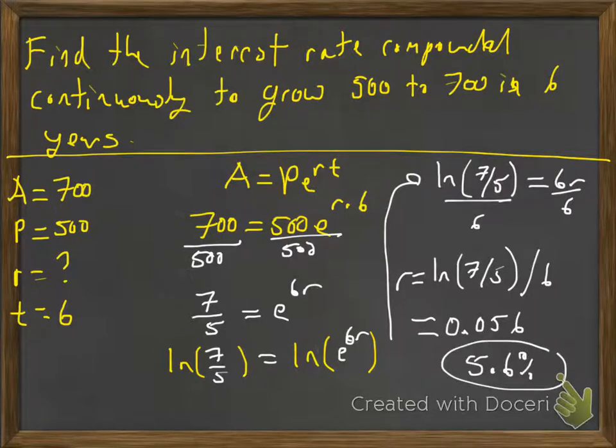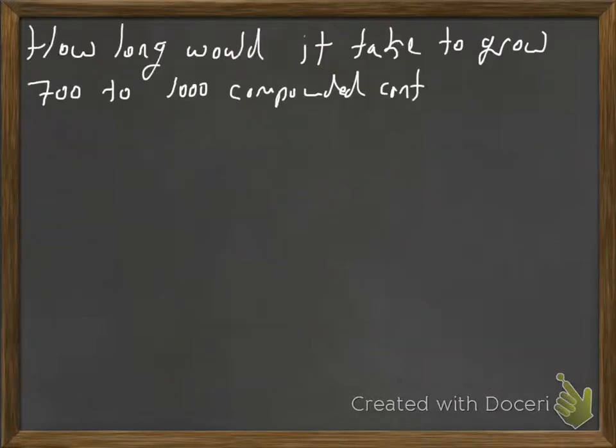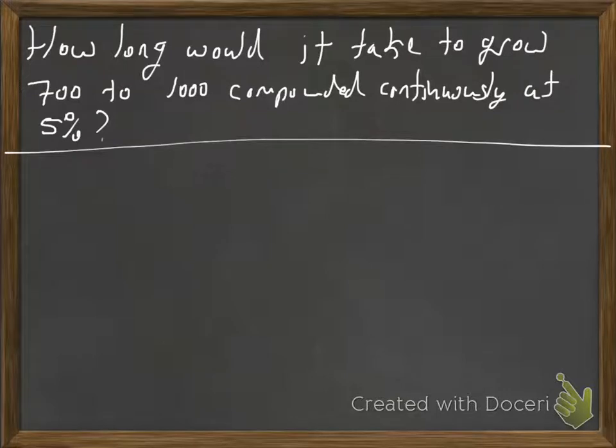And let's look at an example of solving for time. Let's go ahead and write all that stuff in. So how long would it take to grow 700 to 1000 compounded continuously? So there's the magic word continuously for the Pert equation, and this time they give us an interest rate of five percent. Now another question they could ask us is how long does it take us to double, to triple—those are also asking us to solve for time.